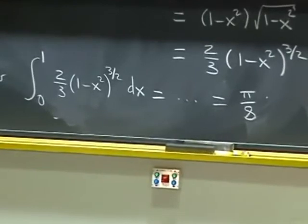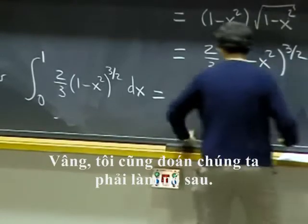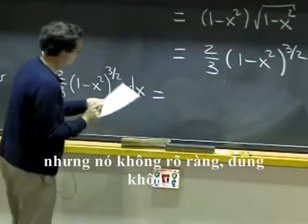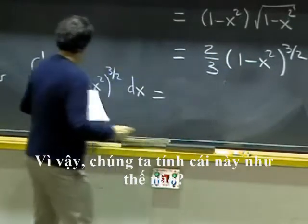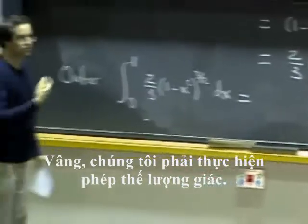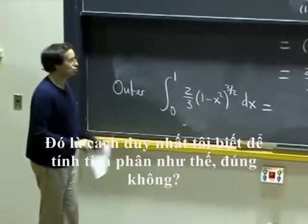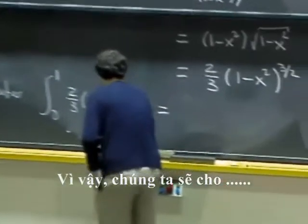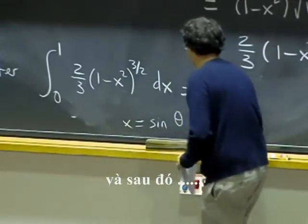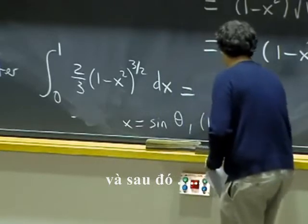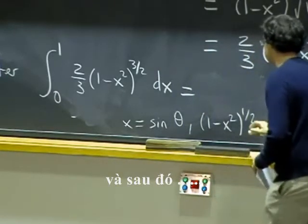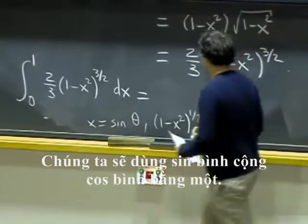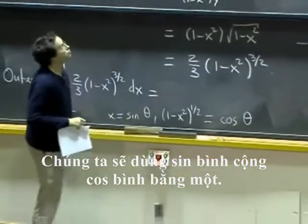OK, well, I guess we have to do it then. I wrote something on my notes, but it's not very clear. OK, so how do we compute this thing? Well, we have to do trig substitution. That's the only way I know to compute an integral like that. OK, so we'll set x equals sine theta. And then square root of one minus x squared will be cosine theta. OK, we're using sine squared plus cosine squared equals one.